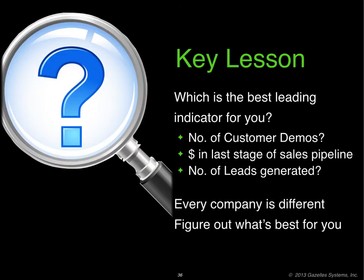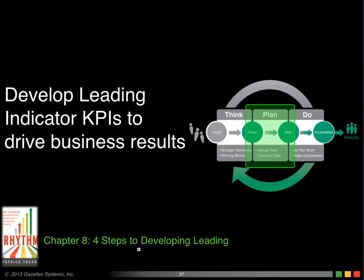The key lesson here is to figure out what is the best leading indicator for you. In the example we ran, we talked about sales — it could be number of customer demos, dollars in the last stage of a sales pipeline, or number of leads generated. It just depends on what problem you're facing and what constraint you have in sales. Every company is different, so figure out what's best for you. In this segment, we talked about developing leading indicators to drive business results, using leading indicators to drive those results which are also measured by results indicators, and then putting both on the dashboard.